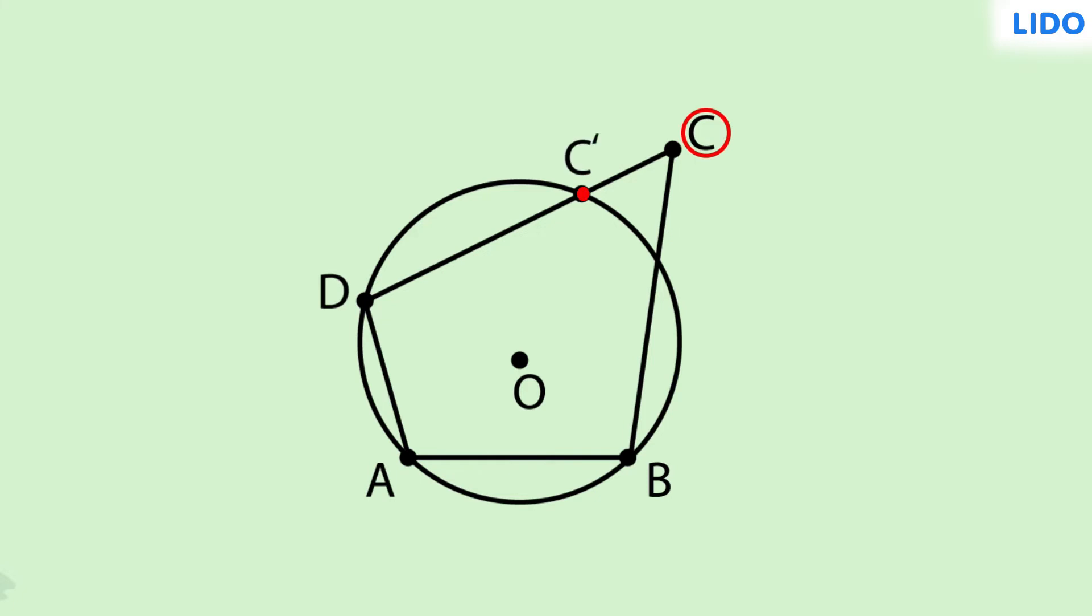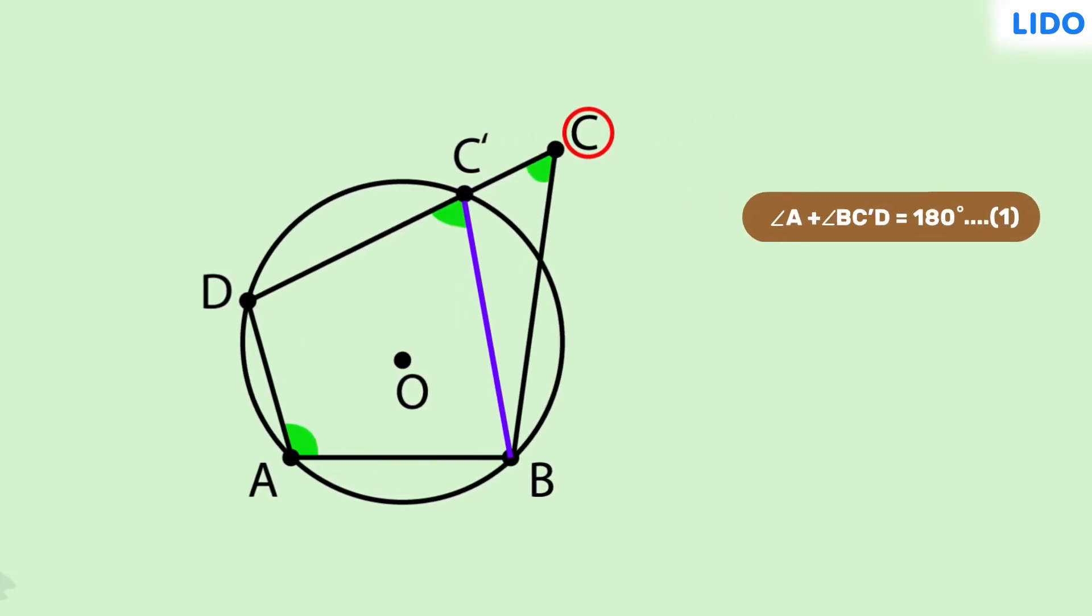So the points A, B, C dash, and D lie on the circle. That means A, B, C dash, D is a cyclic quadrilateral. In that case, we know that the sum of opposite angles must be equal to 180 degrees. So angle A plus angle BC'D equals 180 degrees. Let's mark this as equation 1.